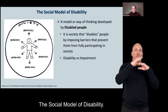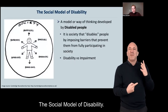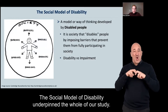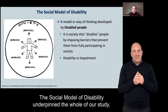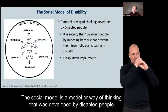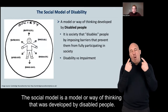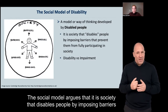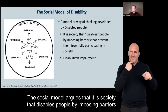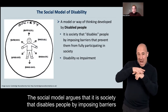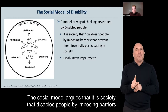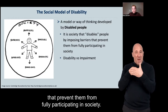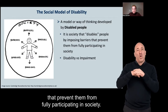The social model of disability underpinned the whole of our study. The social model was developed by disabled people and argues that it is society that disables people by imposing barriers that prevent them from fully participating in society.